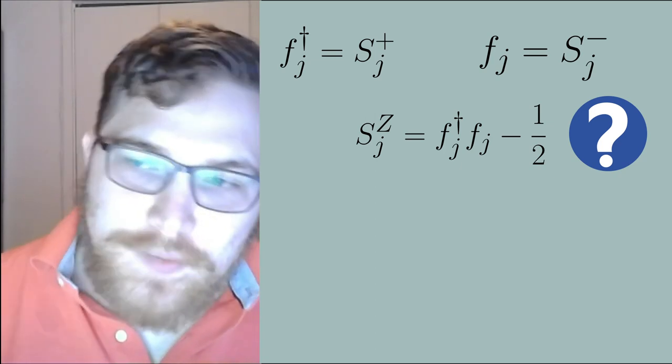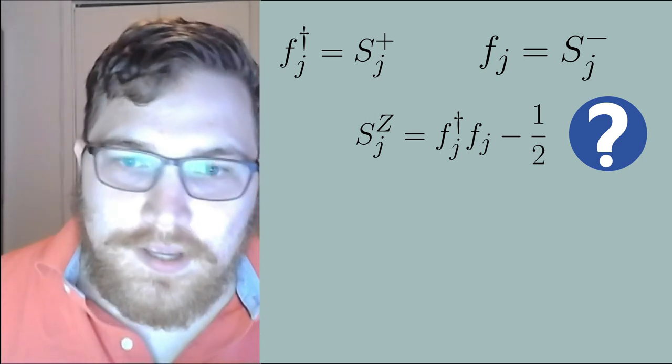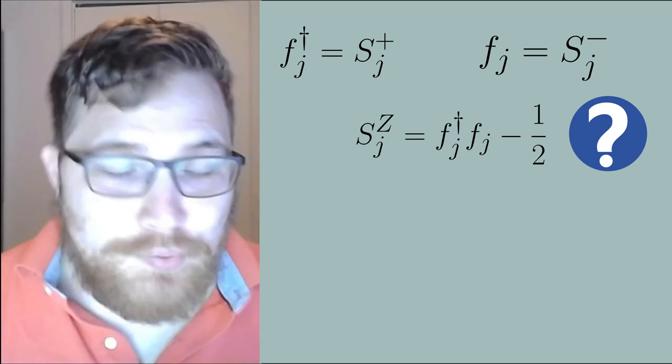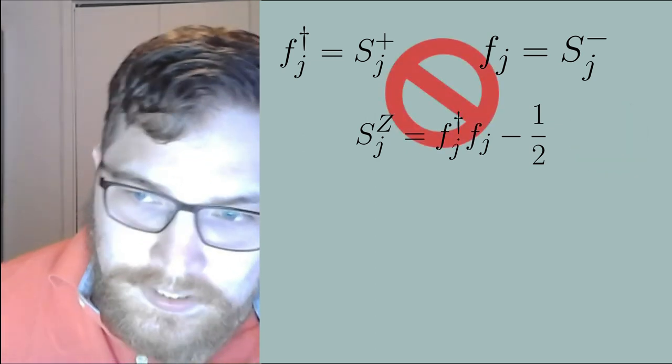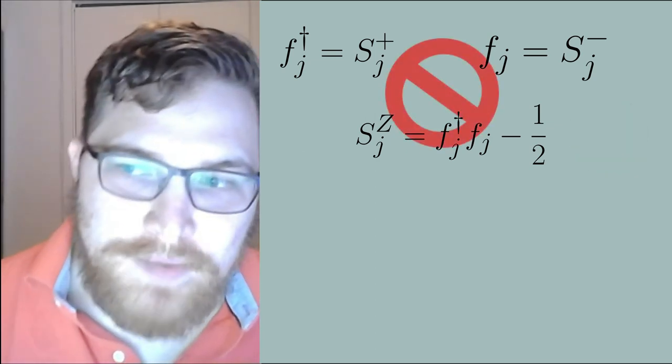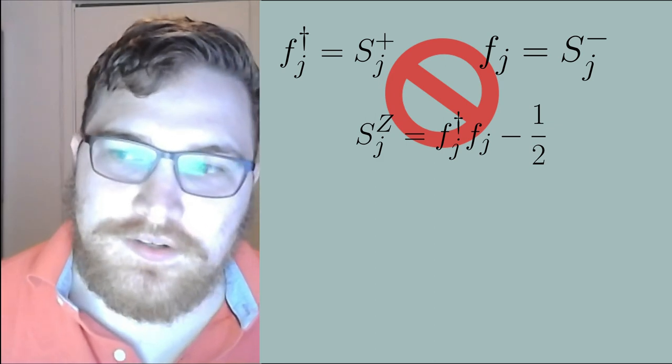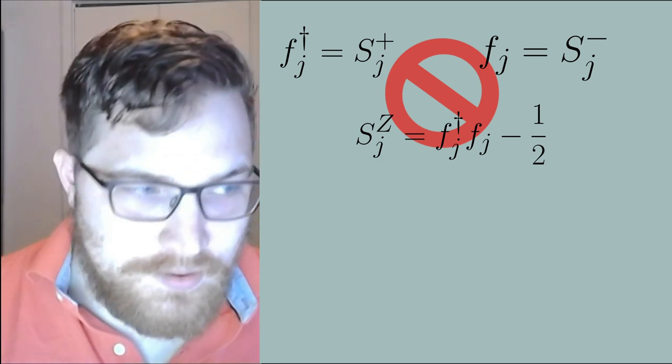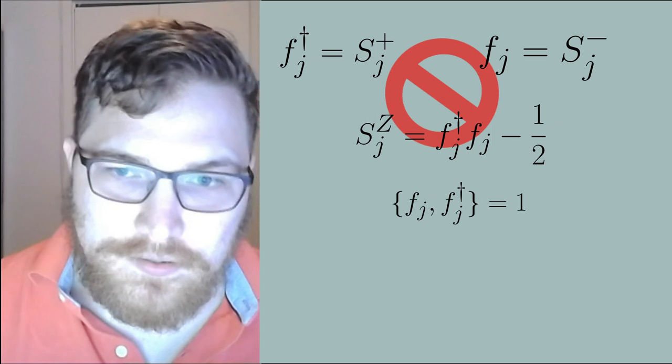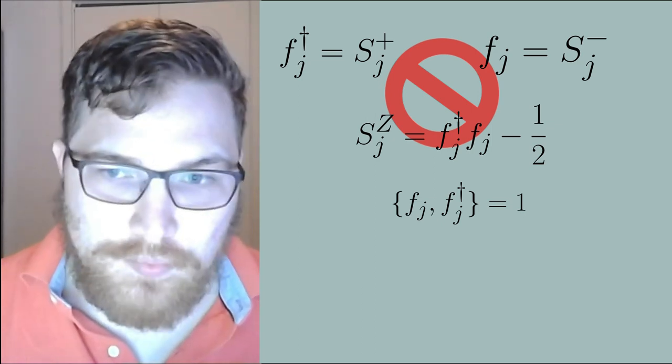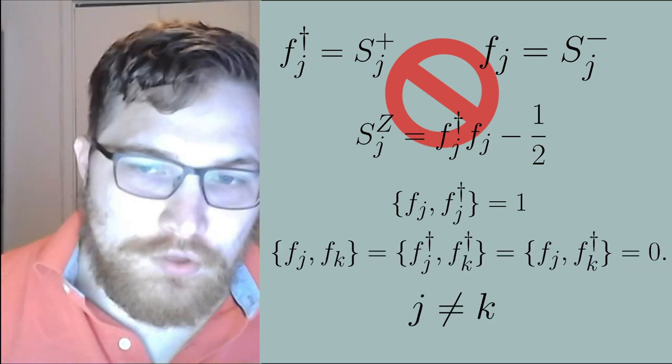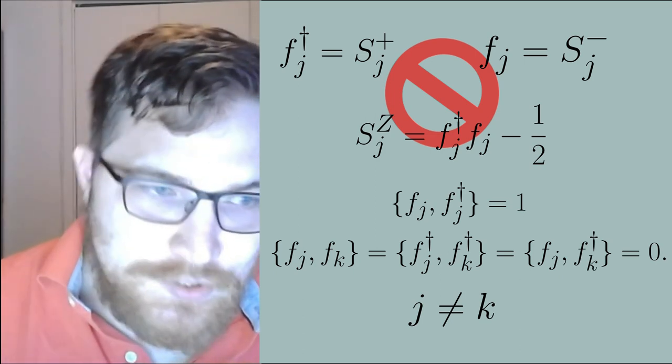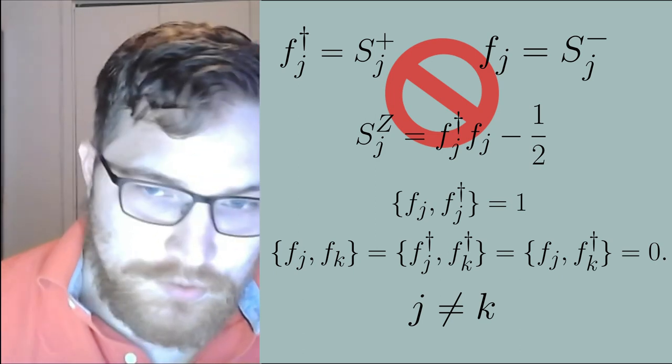But the problem with this is that as soon as we have more than one possible lattice site for a fermion to sit in this breaks apart. This breaks apart because fermions need to obey anti-commutation relations with not only their same site operators between the annihilation and the creation operators but also for all other lattice sites that is they must obey the following anti-commutation relations.